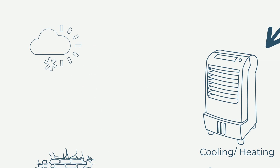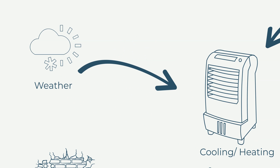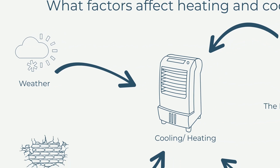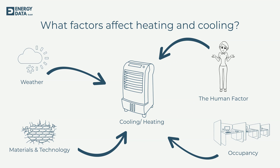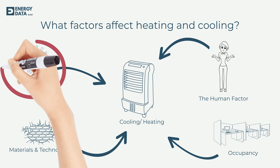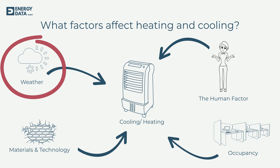Last but not least, we have external factors — things we have no influence over, like the weather. Every kid knows that on colder days you have to run your heater at a higher level and consume more energy, and vice versa for AC usage on hot days. In the next part, we will explore how outside temperatures affect energy consumption and why degree days are so important for accurate data analysis.